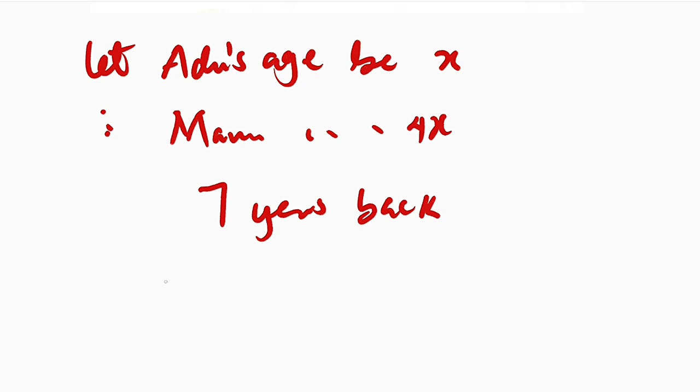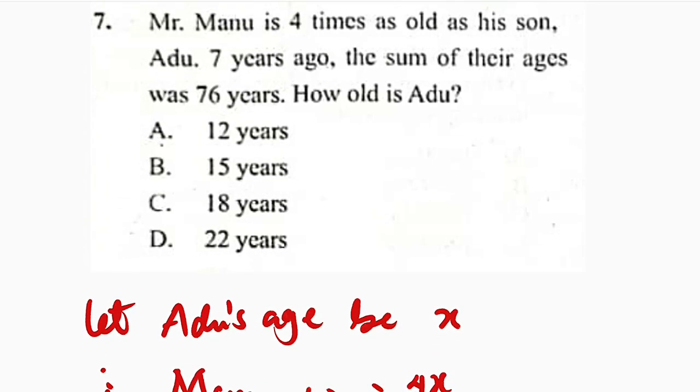So what are we going to do? 7 years back, the sum will be x minus 7, plus, because we are taking sum, the father's age is 4 times the son, but we have to subtract 7 as well, 7 years back. And we have the result to be 76.